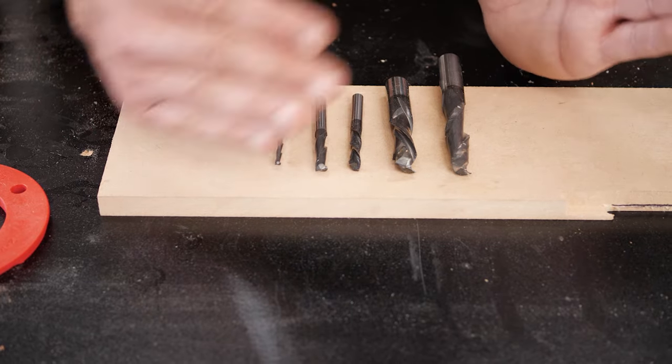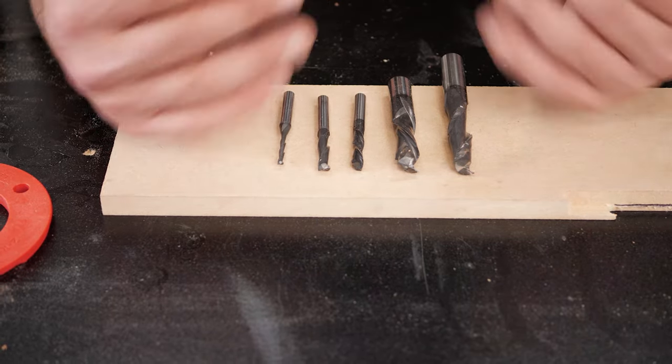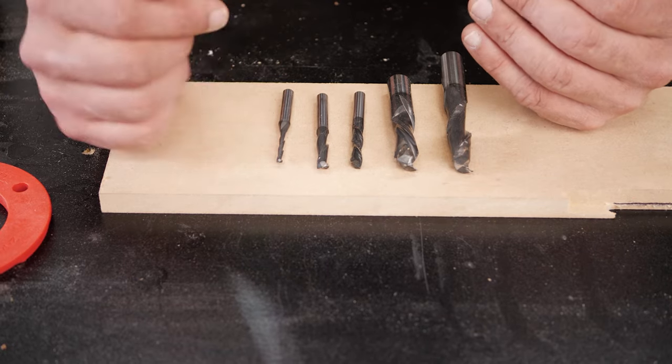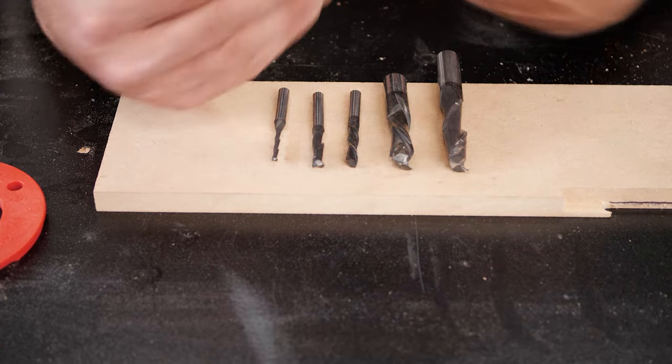Bits come in spirals. You get a sideways cut, so it's like a shearing cut. You get a much better finish and it clears chips, and it can clear chips up or down.